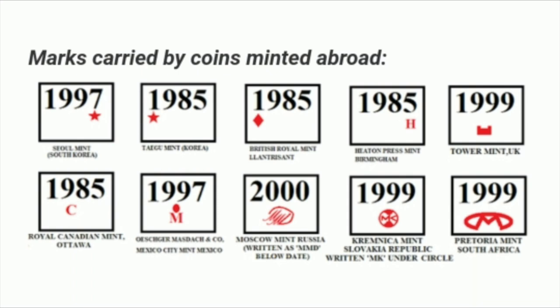The 1985 C 25 paisa was minted at the Royal Canadian Mint in Ottawa, Canada. The 1997 coin with a dart mark is from the Ohingo Mustach Company, Mexico Mint. Around 2000, there are coins marked M, D, and K from South Korea.